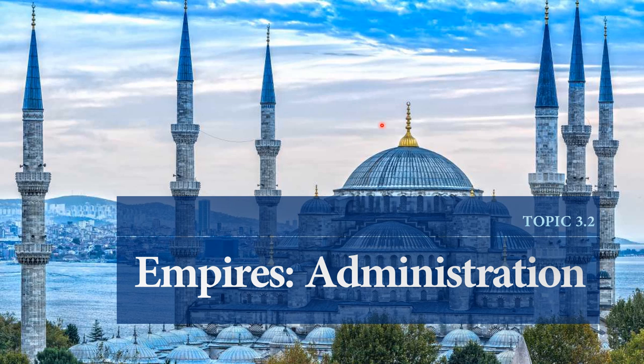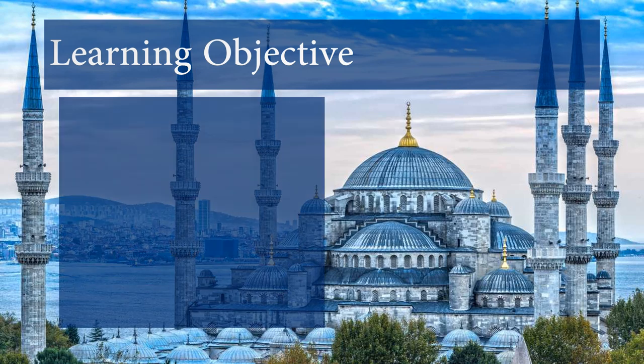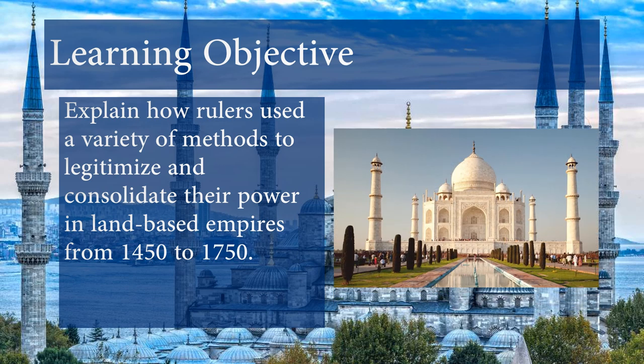Let's talk about topic 3.2: how empires were administered. The first learning objective: explain how rulers used a variety of methods to legitimize and consolidate their power in land-based empires from 1450 to 1750. Now it's about how people legitimize their rule — how did they get power and keep it consolidated? There are many ways, and we're going to learn examples.